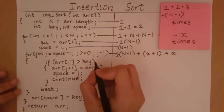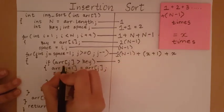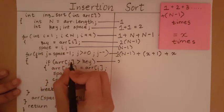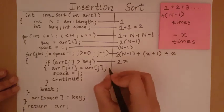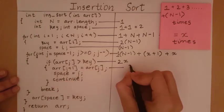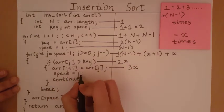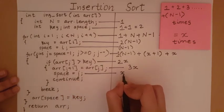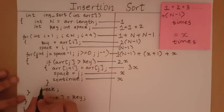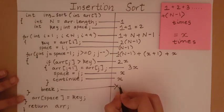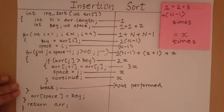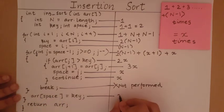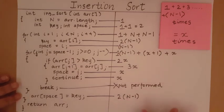Inside the j-loop, the condition check involves one indexing and one comparison, so 2 primitive operations, performed x times. We are analyzing the worst case — when the input array is in descending order — so the if-statement is always entered: that involves 2 indexing operations plus one assignment, totaling 3x. 'space = j' happens x times, and 'continue' happens x times as well.